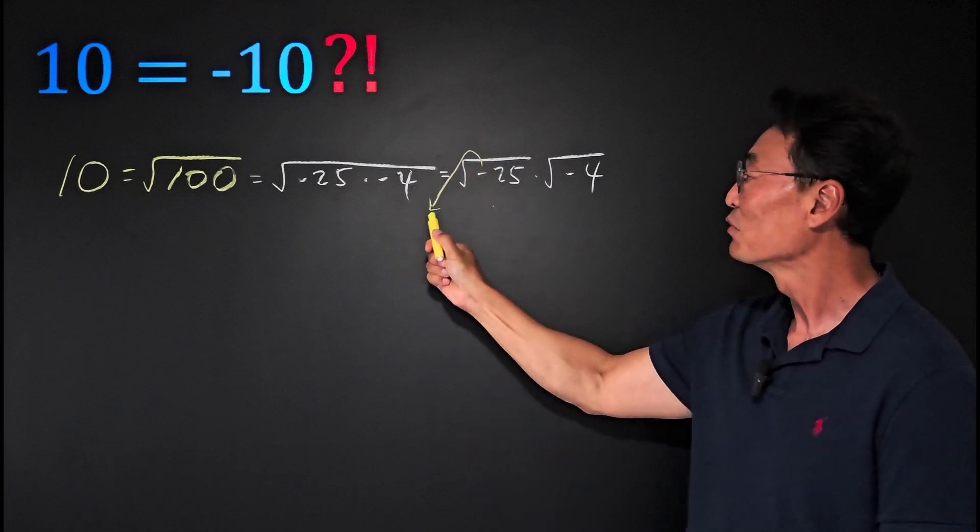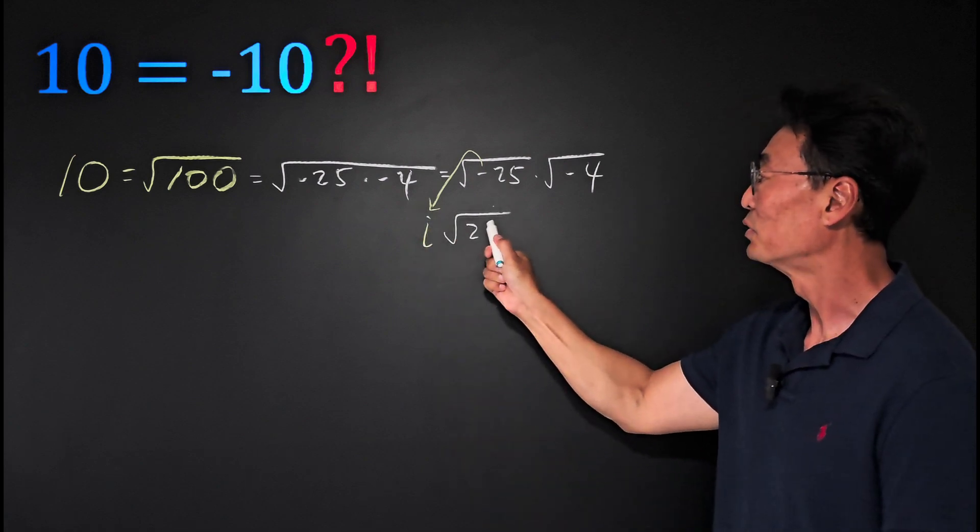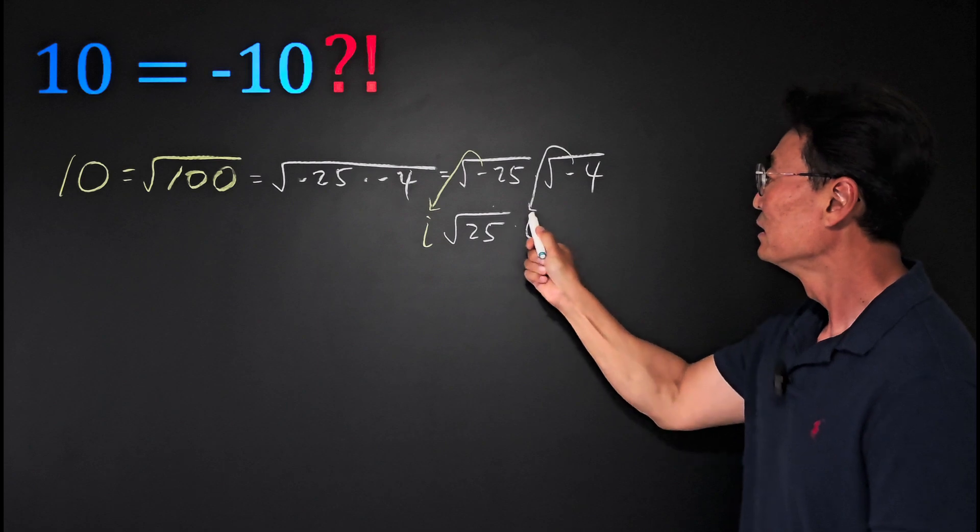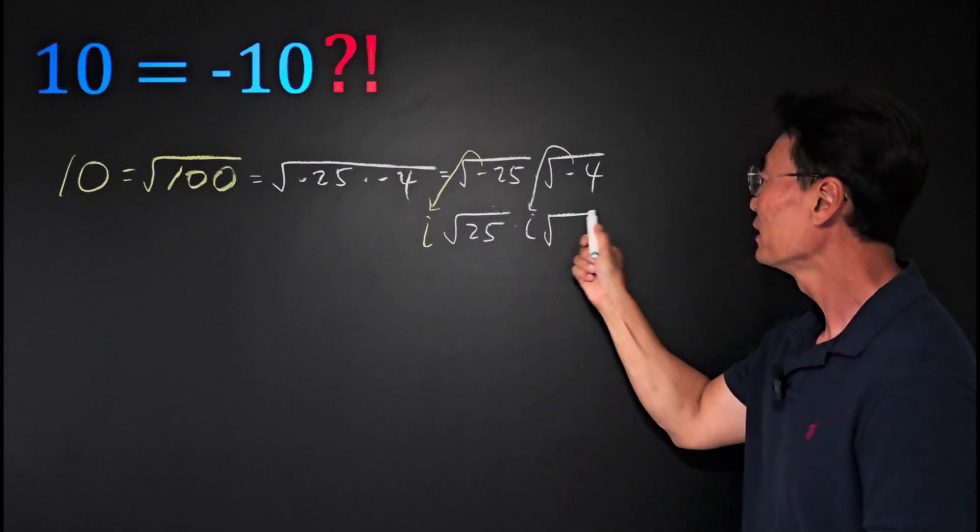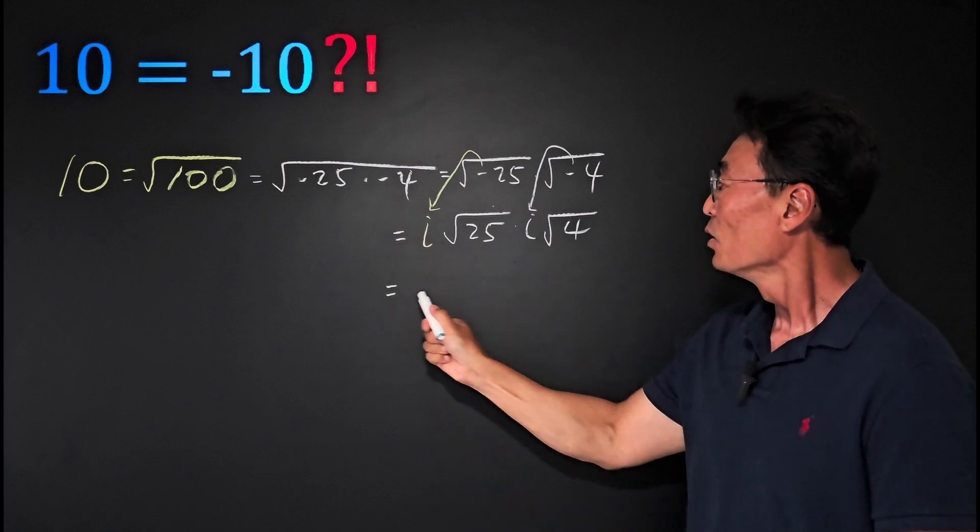We have square root of 25 left. Same thing, we'll take that negative sign outside, change it into an i, and we have square root of 4 left.